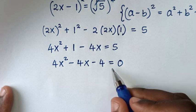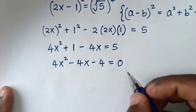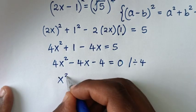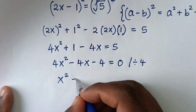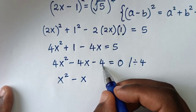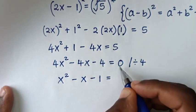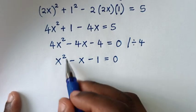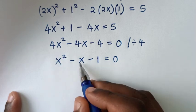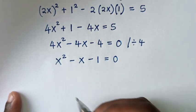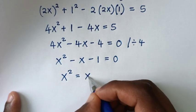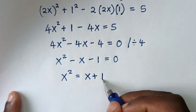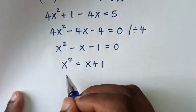This quadratic equation is divisible by 4, so we divide the whole equation by 4. So x squared minus x minus 1 equals 0. Then from here we make x squared the subject, taking negative x and negative 1 to the right side, giving x squared equals x plus 1.